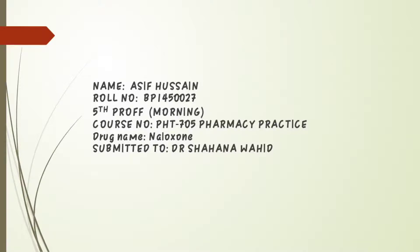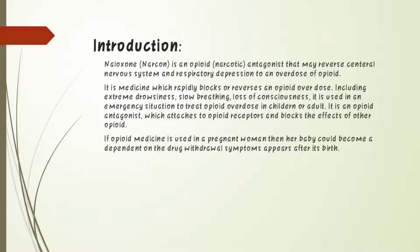First of all, the introduction of naloxone: it is an opioid antagonist that can reverse central nervous system and respiratory depression to end the overdose of opioids. It is a medicine which rapidly blocks opioid overdose effects including extreme drowsiness, slow breathing, and loss of consciousness. It is used in emergency situations to treat opioid overdose in children and adults.